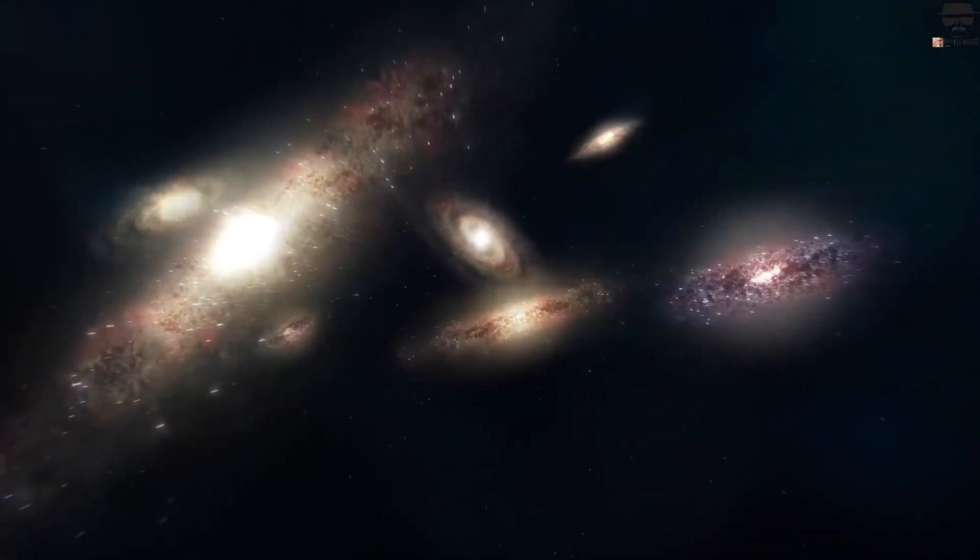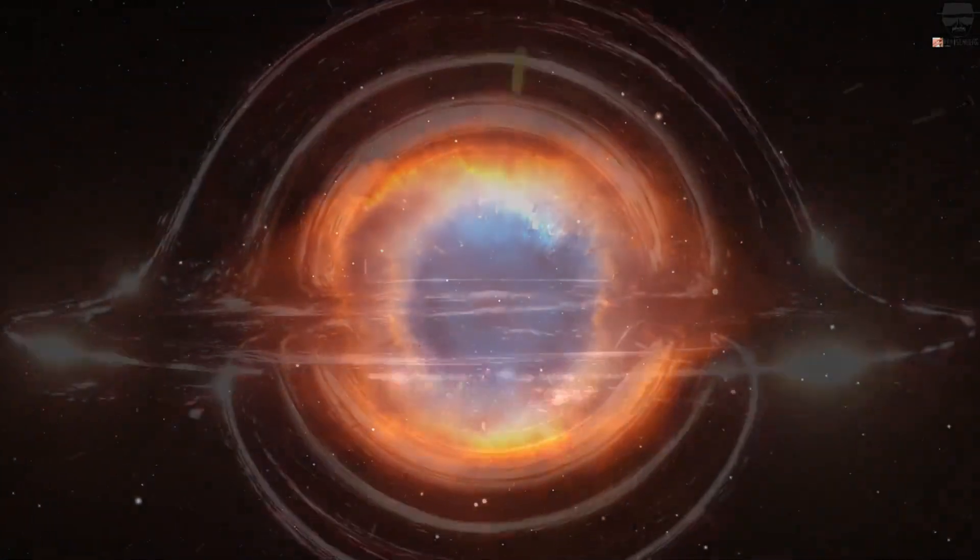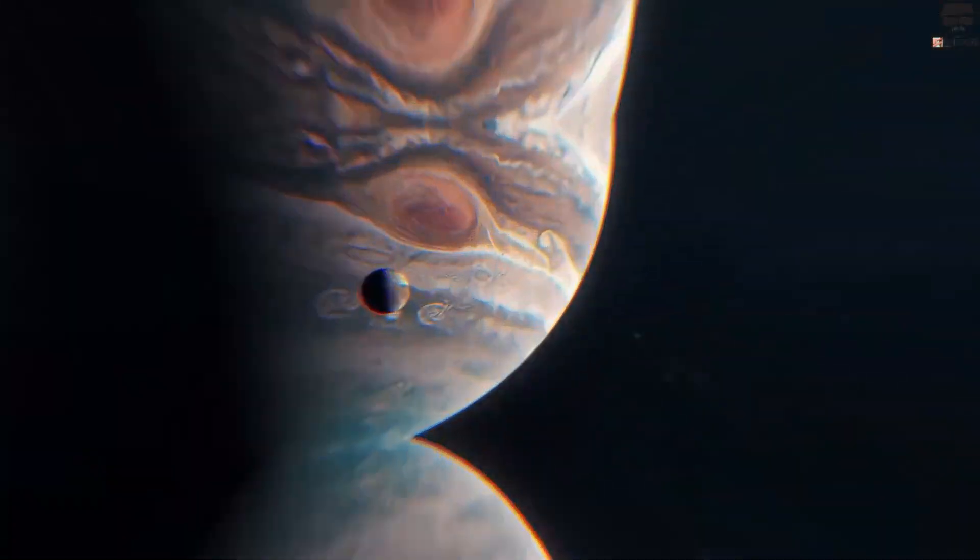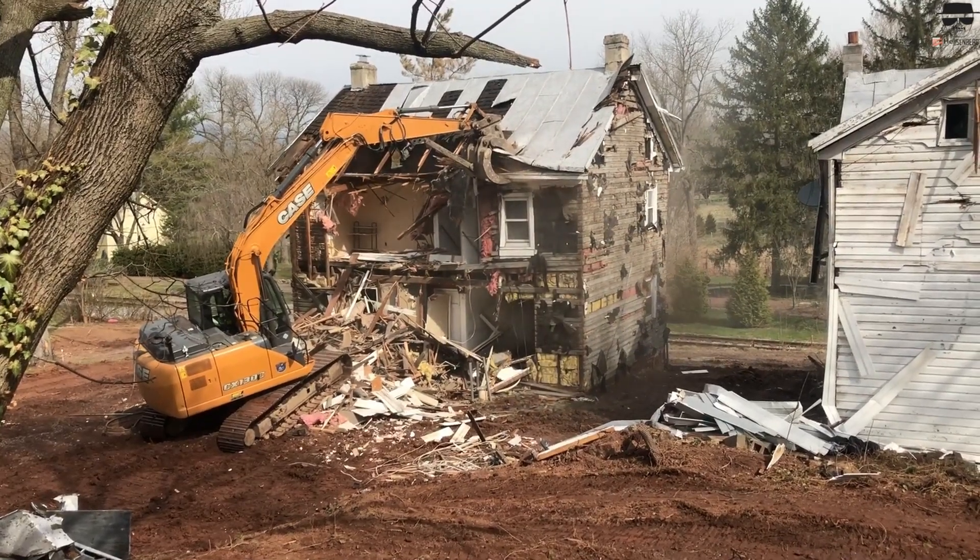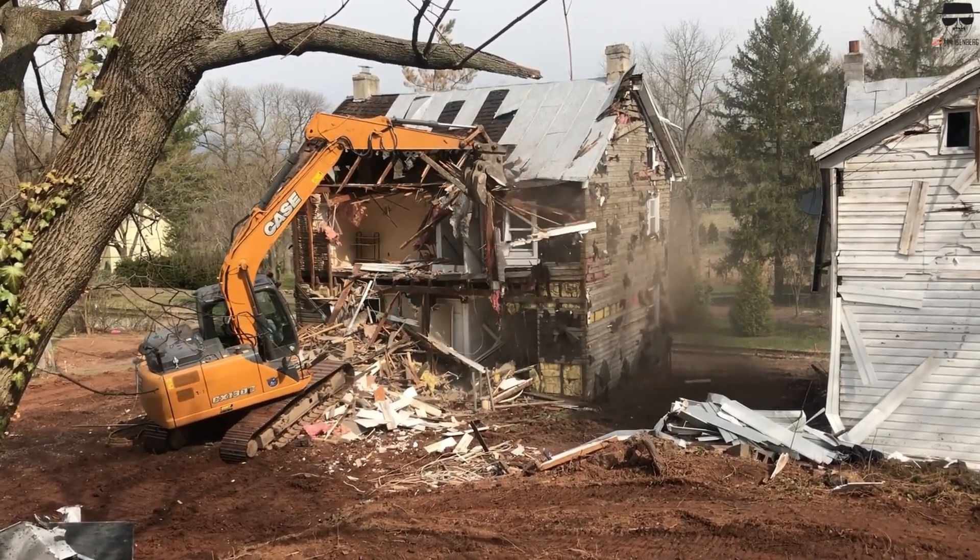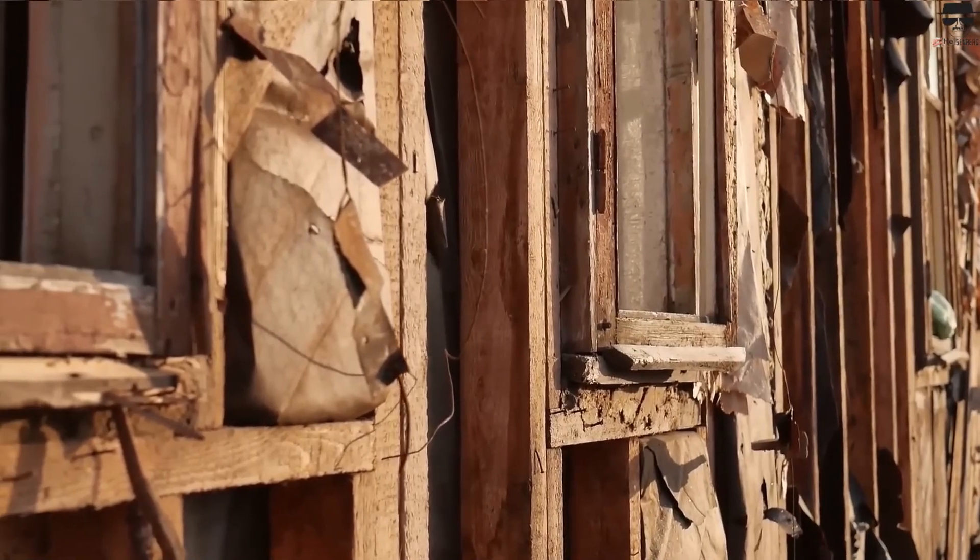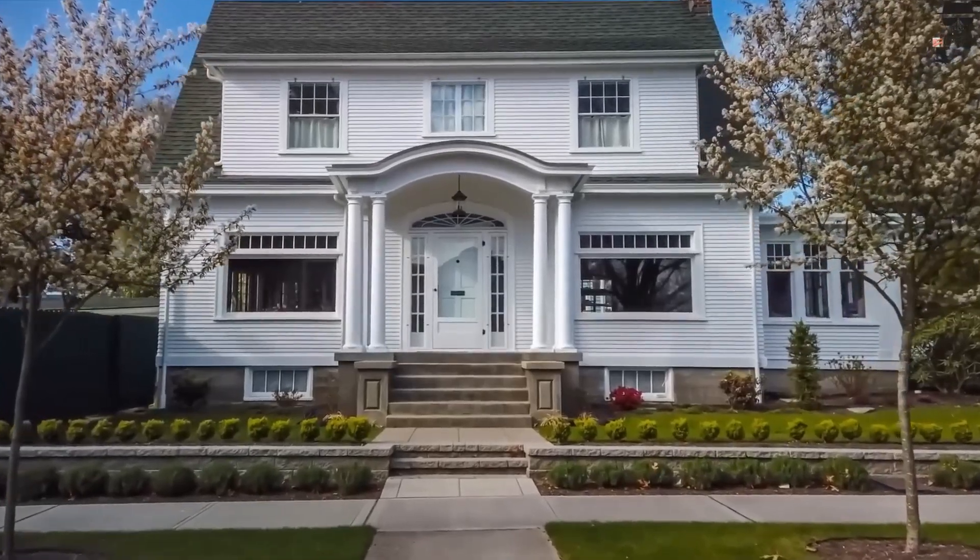Entropy is usually described as chaos, but can be better understood as an increase in how many states are possible for particles in a certain system. For example, think of a house demolished into rubble. It is an example of an increase in entropy because that rubble can make many other structures like sheds, bookshelves, mounds, and paper. However, a house is only one particular state of those particles.